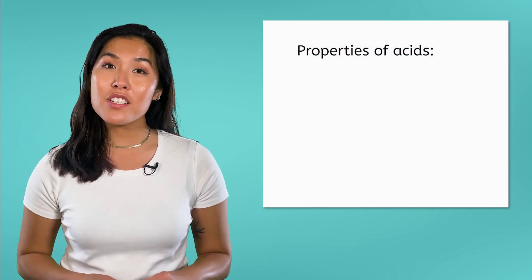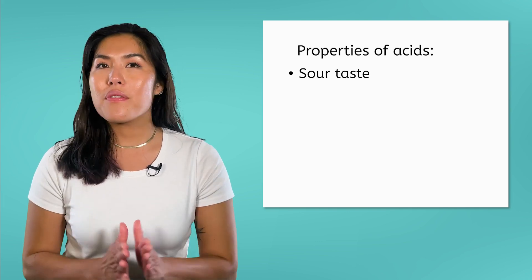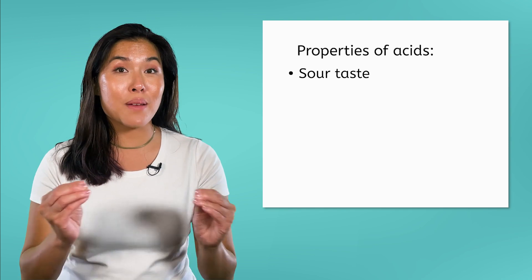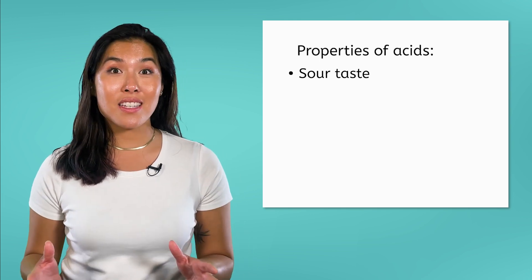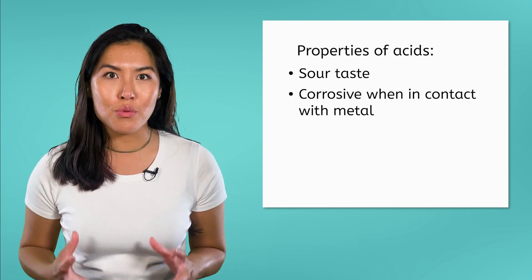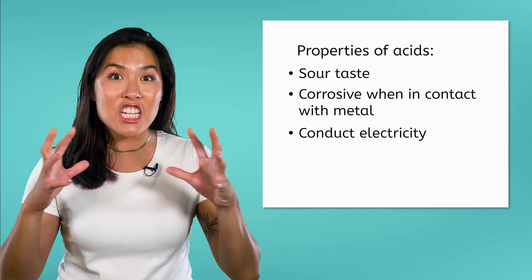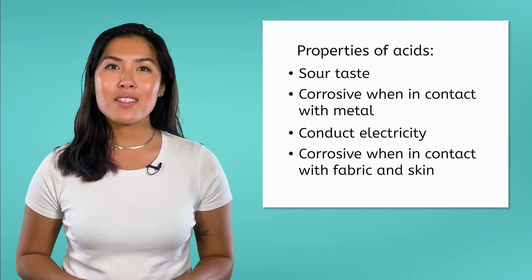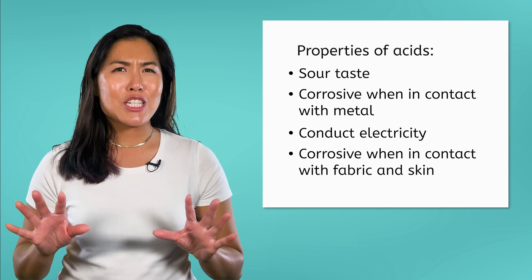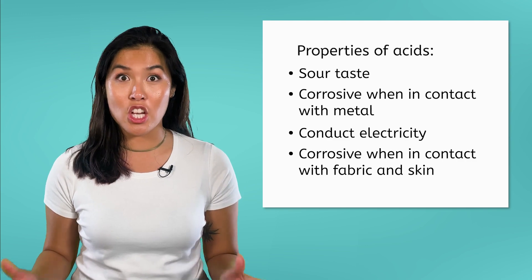I want you to think about lemon juice again. We already talked about its sour taste. Can you think of any other properties? Have you ever noticed that lemon juice is sold in plastic containers, not metal cans? That's because acids, like the citric acid found in lemon juice, are highly corrosive when in contact with metals. Other key properties of acids are that they conduct electricity and are corrosive when in contact with fabric, skin, and metals. Just a friendly reminder, though, don't ever test for an acid using taste, as many acids are dangerous to our bodies.